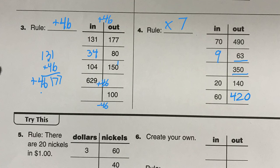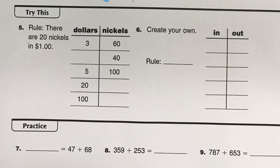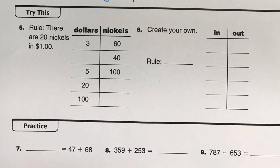I think the rest of these are pretty simple. This is basically saying there are 20 nickels in a dollar, so you need to do times 20 here. Does that work? 3 times 20 is 60, 5 times 20 is 100. That's good. So now figure the rest of those out on your own.